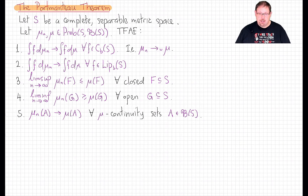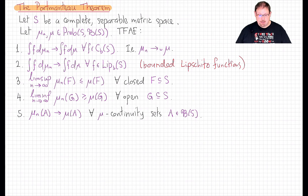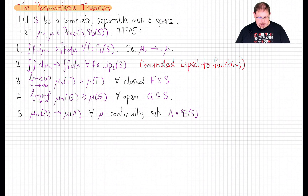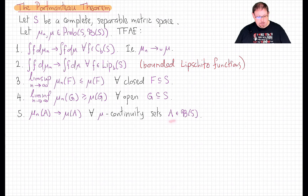It turns out we don't need to test against all continuous bounded functions — it's good enough to test only against bounded Lipschitz functions. We can also check the measures against some events. All we need is that for all closed subsets F, the limsup of mu_n(F) is less than or equal to mu(F). It's also equivalent to check that for any open set G, the liminf of mu_n(G) is greater than or equal to mu(G). Finally, the most important equivalent notion is that weak convergence of mu_n to mu is equivalent to set-wise convergence mu_n(A) → mu(A), but only for mu-continuity sets — Borel sets for which the putative limit mu assigns zero measure to the boundary.